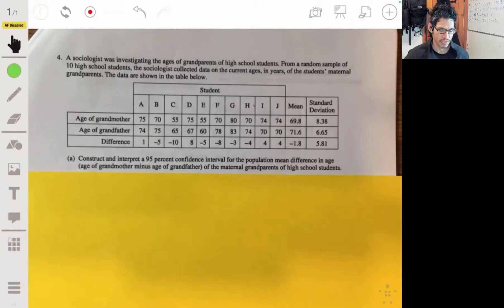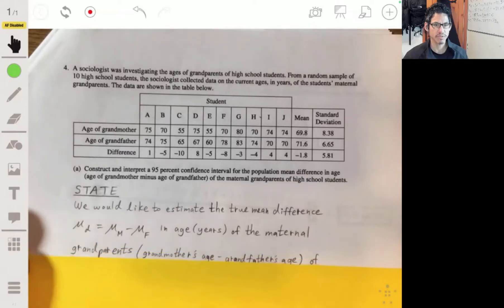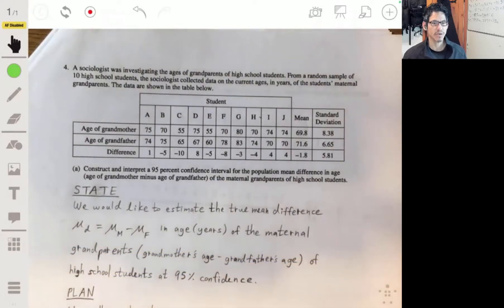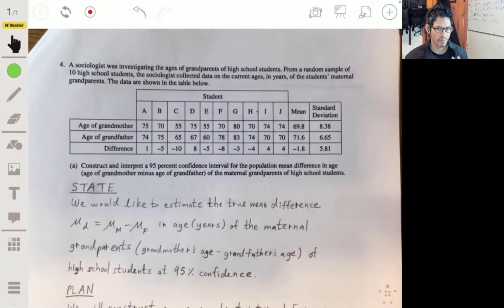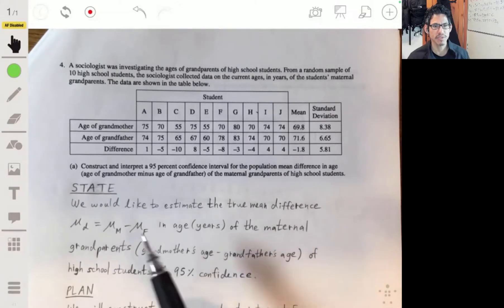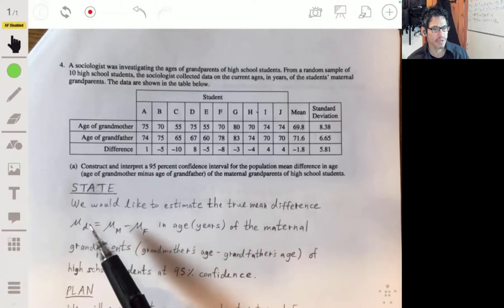So I usually will break these down into the four-step process, which I show my students all throughout the year. Basically starting off with the state, which is just what it says - you want to state what you're trying to do and what your goal is. So we want to estimate the true mean difference, mu sub d, the difference